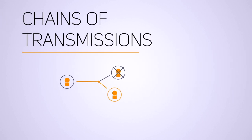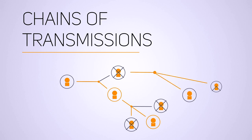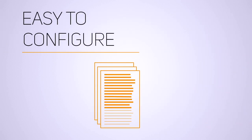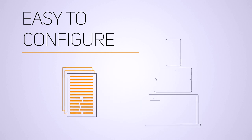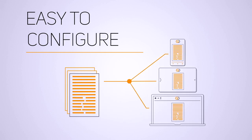Go Data can track how a disease spreads between people in real time. Information is provided immediately. Visualizations of transmission chains allow for contacts and cases to be traced quickly. Go Data is easy to configure and can adjust to the needs of any outbreak response, providing fully customizable data forms and variables.